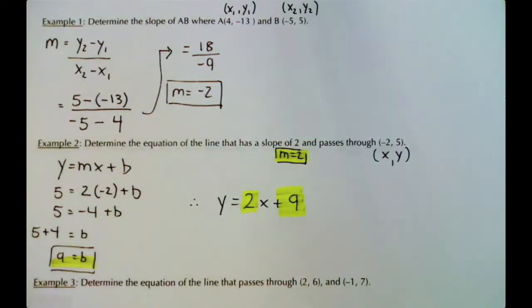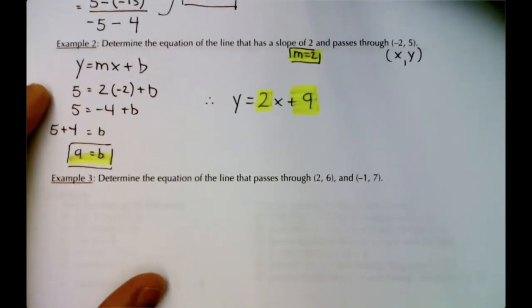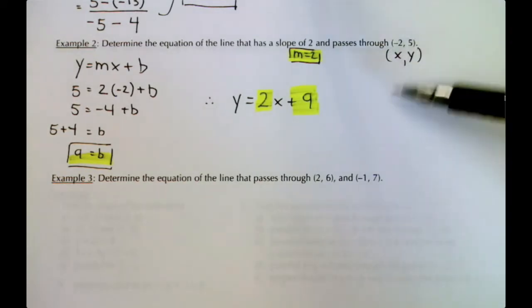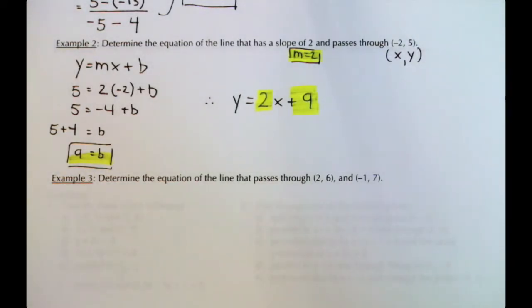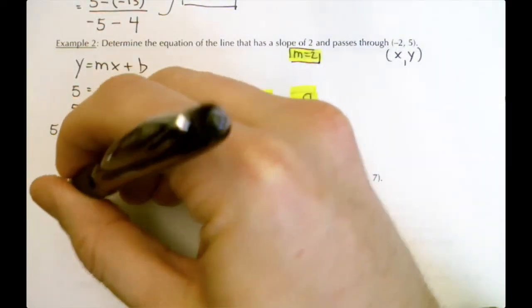Determining the equation of a line is all about finding the slope and the y-intercept. If you're given the slope, you just have to find the y-intercept and then write the equation. If you're given two points instead, you have to find both the slope and the y-intercept. Having done Examples 1 and 2, we now have the tools to handle two points — first use the slope formula from Example 1.